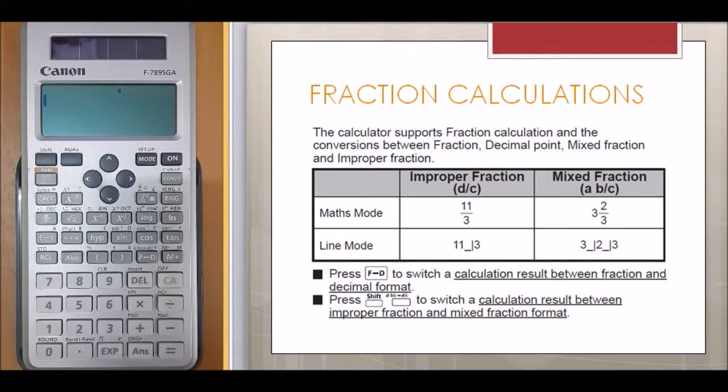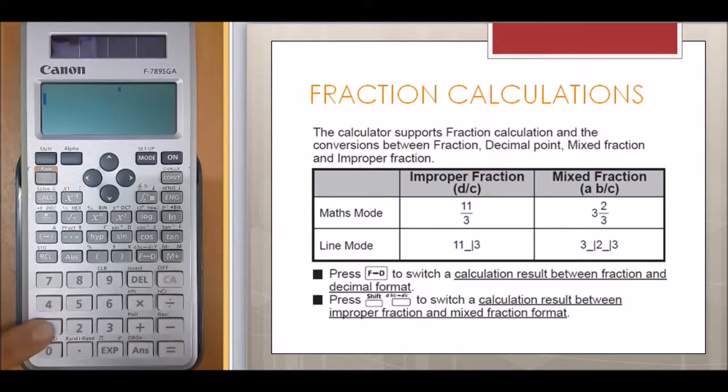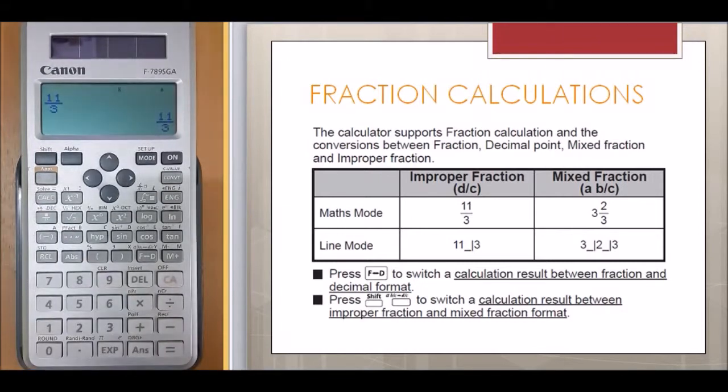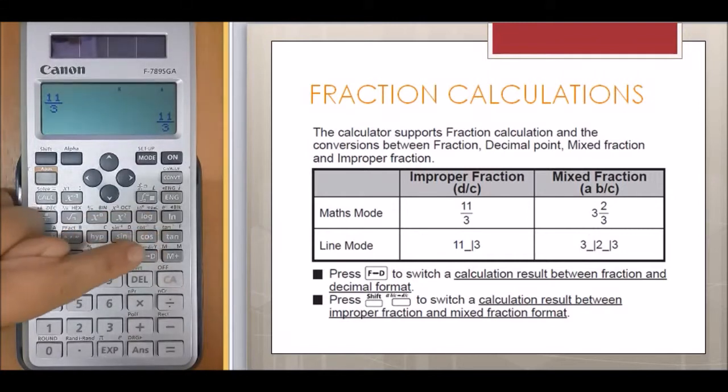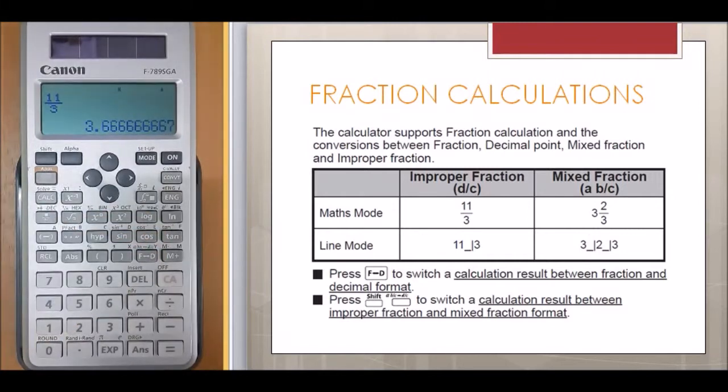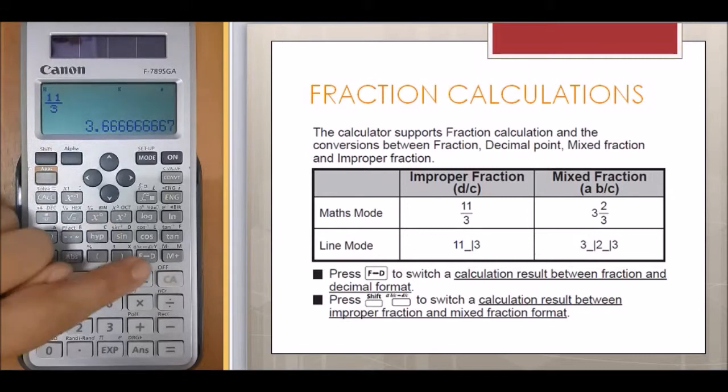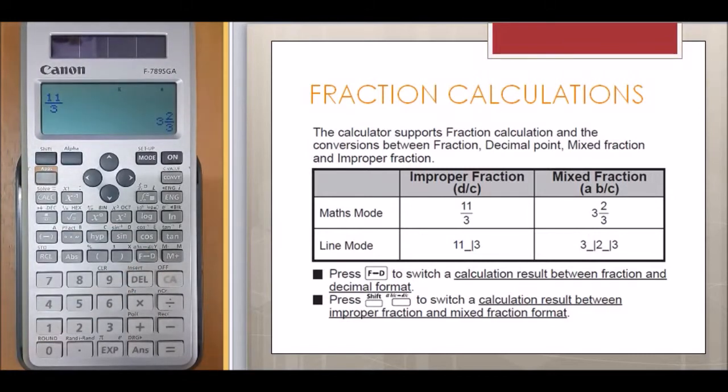First of all, let's see 11 over 3. 11 fraction 3 equal. To switch a calculation result between fraction and decimal format, we press FD. In order to get a mixed fraction, we press Shift FD and you get 3 and 2 over 3.